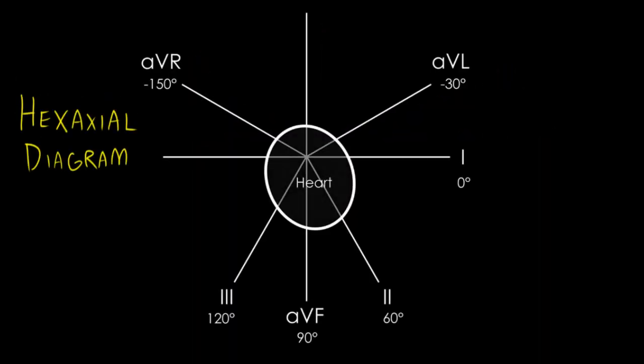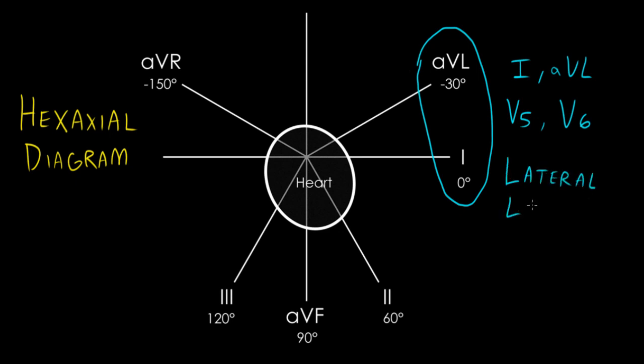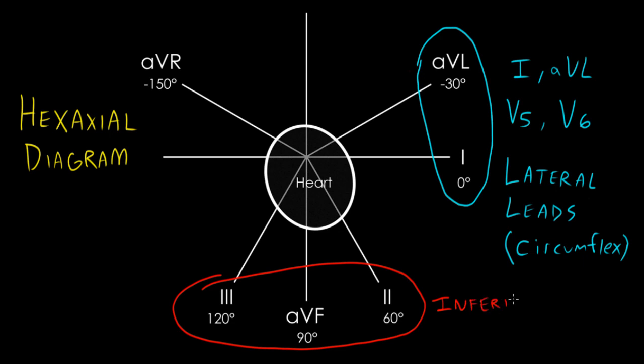So coming back to our original diagram, leads one and AVL over here, along with leads V5 and V6, make up what we call the lateral leads. The lateral leads let us see things from the aspect of the lateral portion of the left ventricle, which is supplied by the circumflex artery. Meanwhile down here, leads two, three and AVF are known as the inferior leads. The inferior leads give us a view of the inferior wall of the left ventricle as well as the right ventricle. This area is supplied by the right coronary artery.